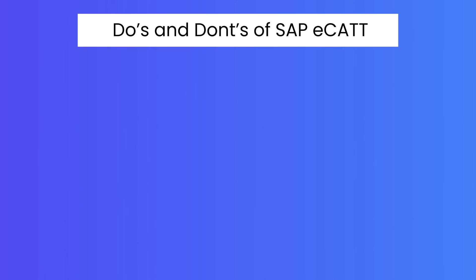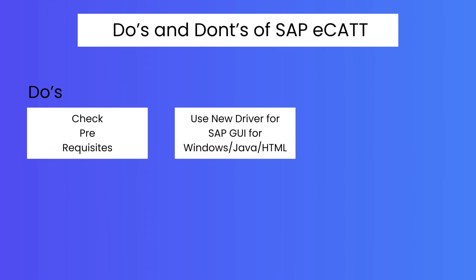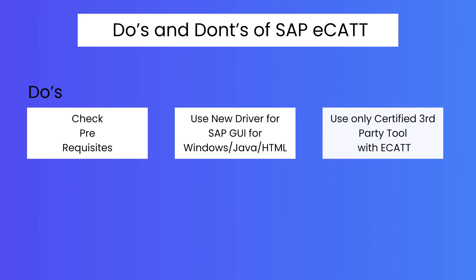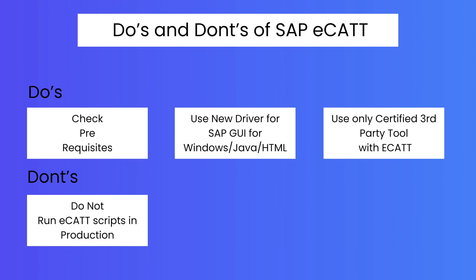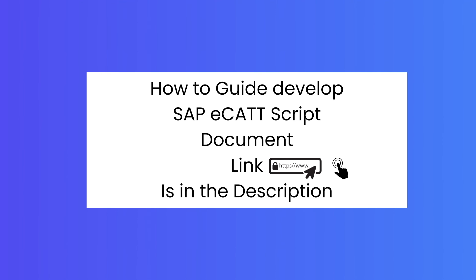Do's and Don'ts of using SAP eCATT: Always check the prerequisites before using SAP eCATT, and make sure you use the right driver for SAP GUI for Windows, Java, and HTML. When integrating an external testing tool with SAP eCATT, make sure the external tool is certified by SAP. Under don'ts: never run test scripts on a production system, and do not use SAP eCATT to test applications that are not supported by the SAP Control Framework. I also have a document in the description that elaborates on how to create test scripts in SAP eCATT.